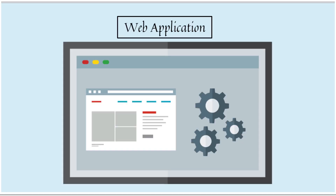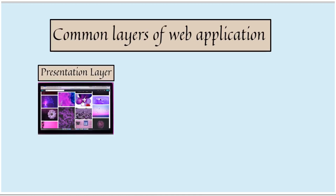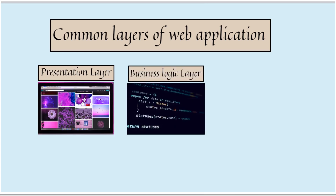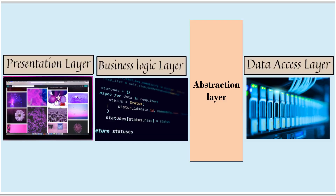First, we have to understand that we can categorize a web application into different layers. Common layers of a web application are: the presentation layer, which decides the look and feel of the application; then the business logic layer; and next comes the data access layer, where all our databases and other data sources belong.